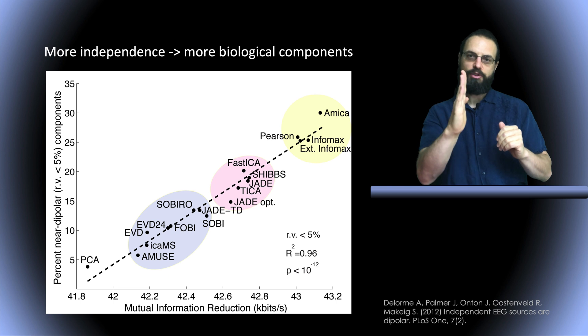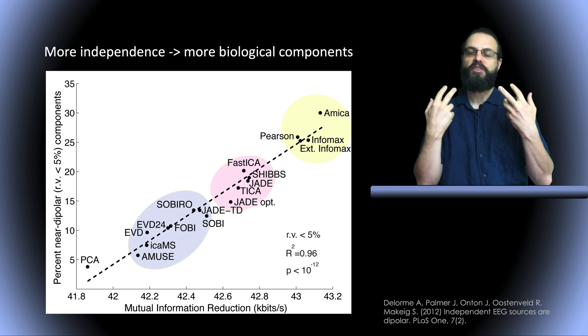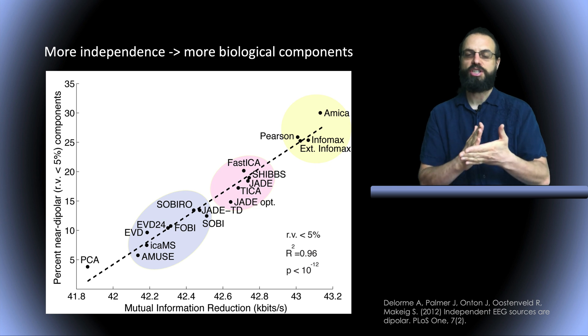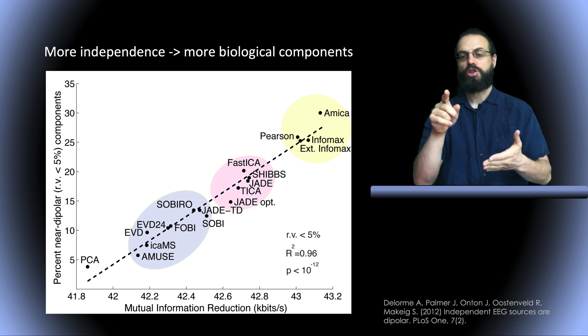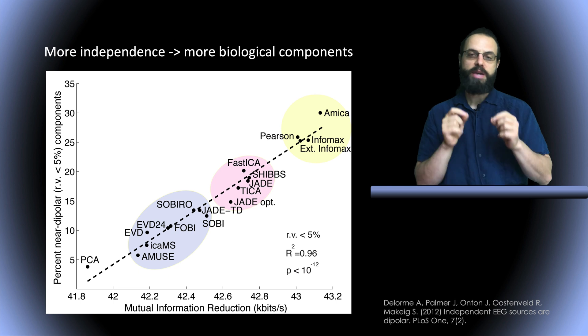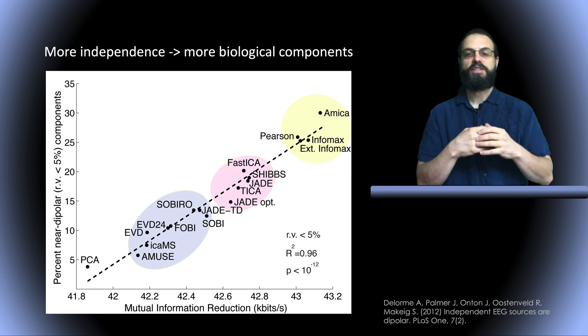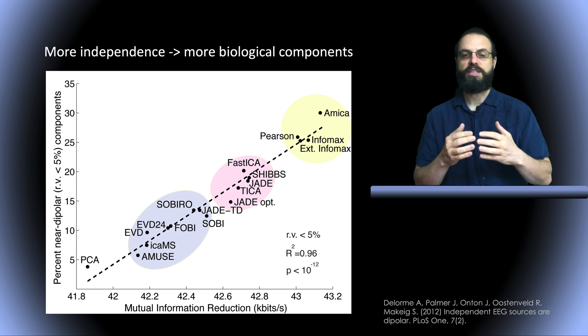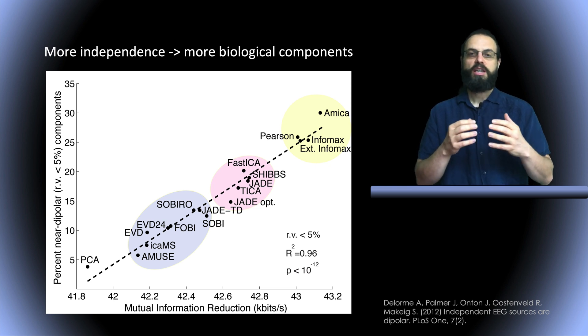Now we can calculate mutual information reduction for every single ICA decomposition. We plotted that against—you remember I said we set a threshold at 5%—and we plotted that against the number of ICA components which are dipolar at 5%. This is what the curve shows. Basically, the more independence, the better the ICA decomposition optimizing independence, the more biological the components are. This was the main result of that paper. The fact that this relationship is linear, from our perspective, is relatively by chance, because there is no real connection between these two measures. One is about the statistics of the data, mutual information reduction, and another one is the biophysical model.